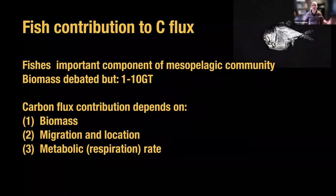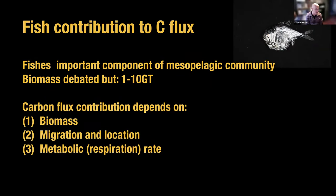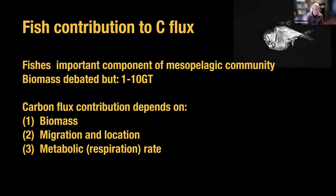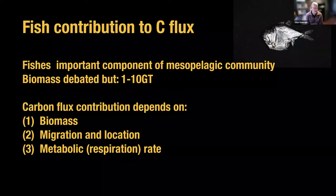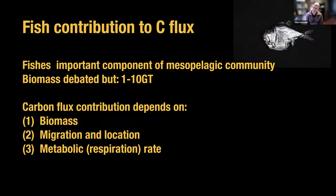Let's assume fishes are an important component of the mesopelagic community — a significant amount of the total metazoan biomass in the mesopelagic is fish. The total biomass is uncertain, and one of the main reasons is that they're relatively difficult to systematically catch in nets, and also have varying reflectance for acoustic signals. So constraining the total biomass varies by more than an order of magnitude.